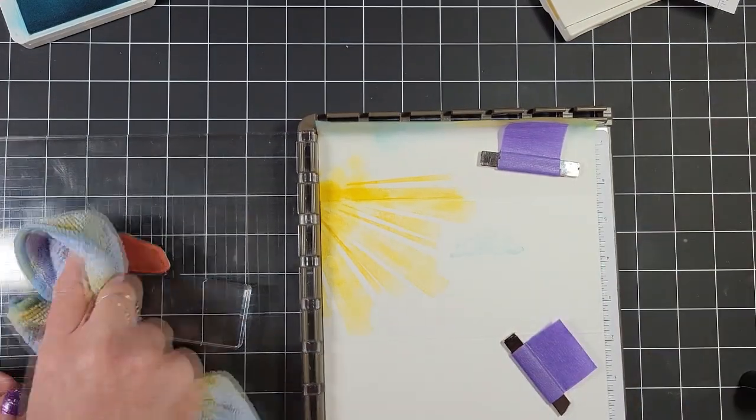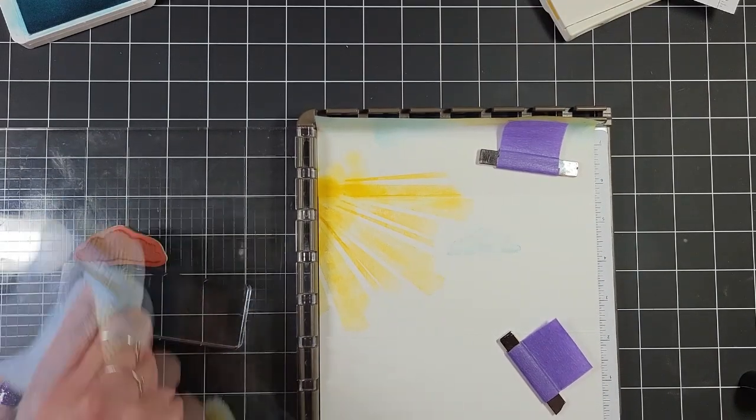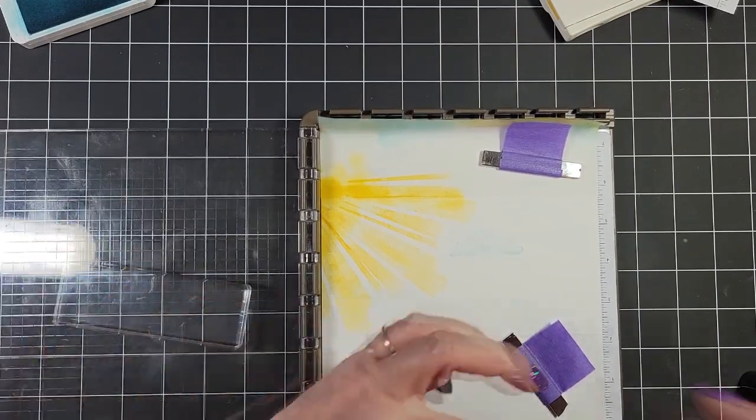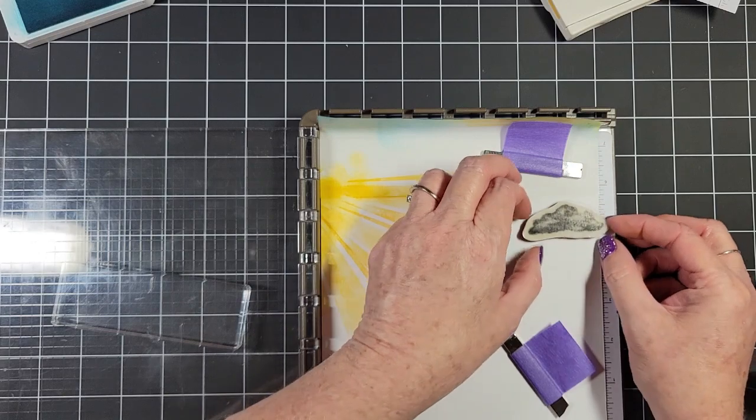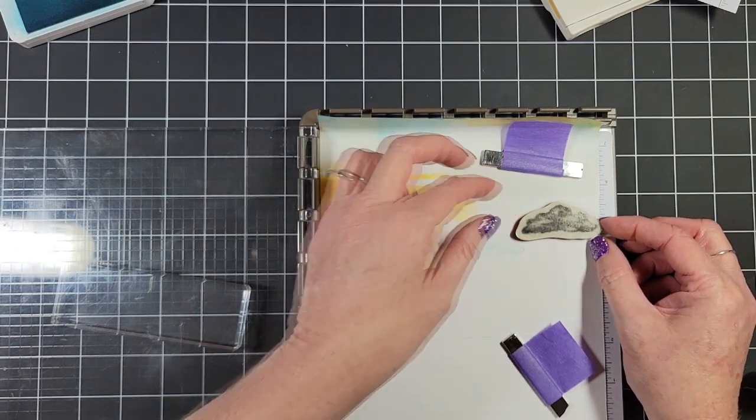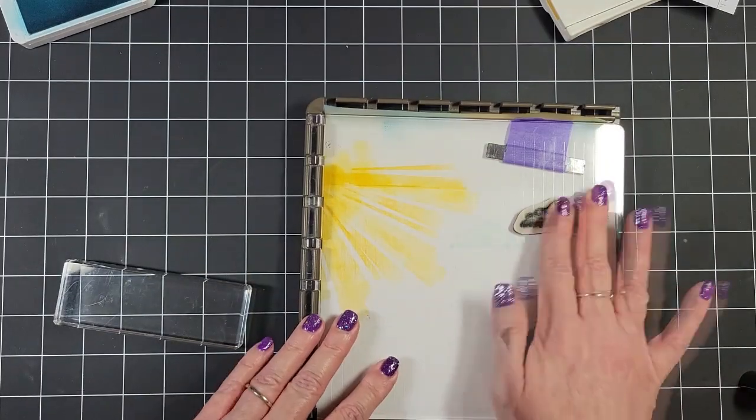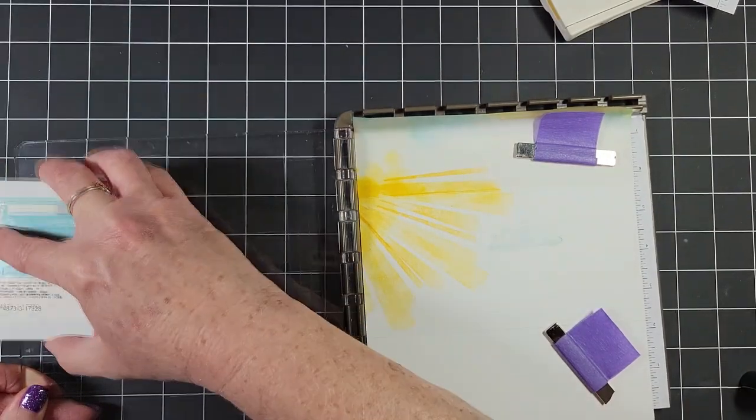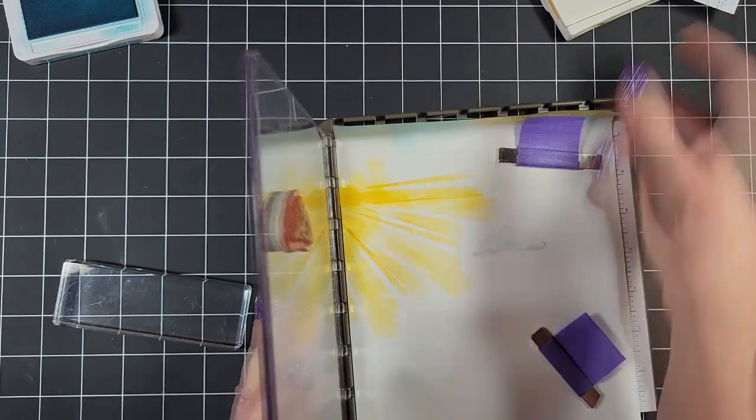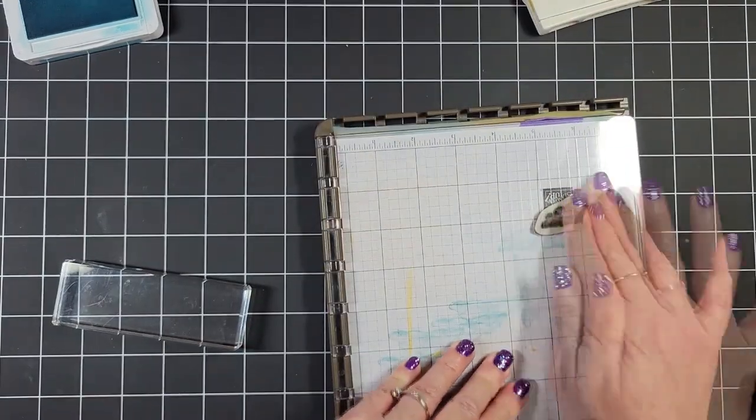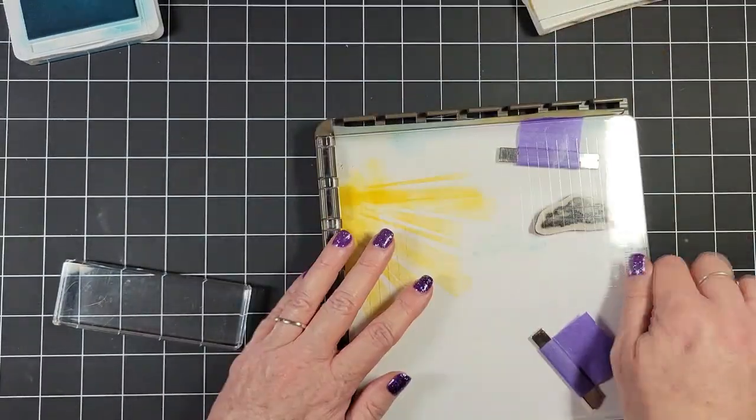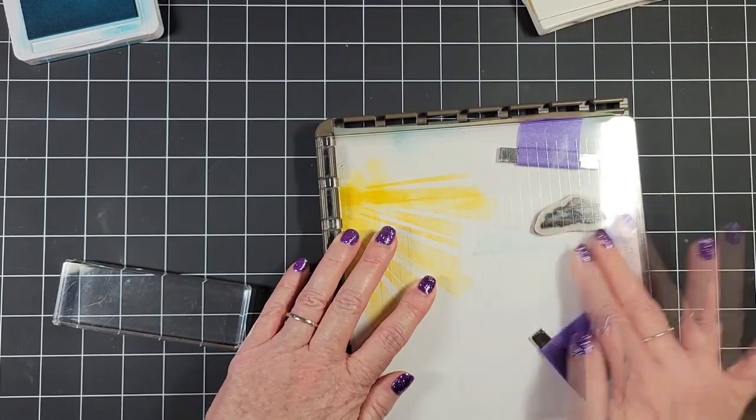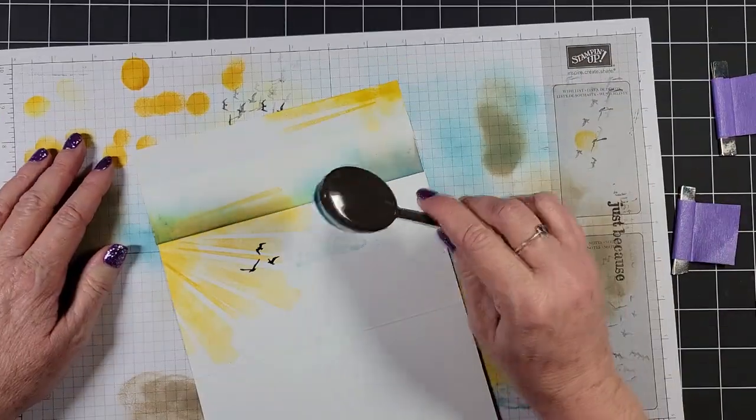And we're going to wipe that off again, reposition the cloud, get it just where I want it, close the door on the Stamperatus, and ink it up again with balmy blue. Whoops, I almost forgot. See? Stamp it off on a scrap piece of paper and stamp it onto the project.